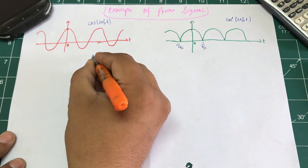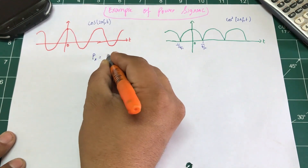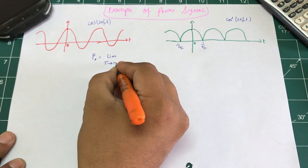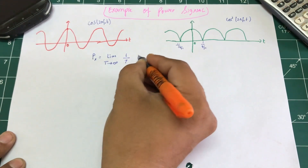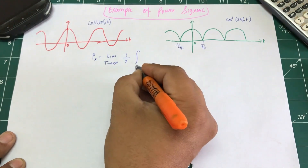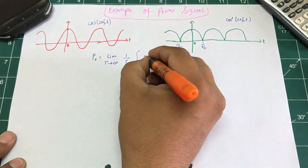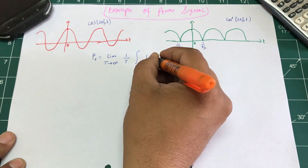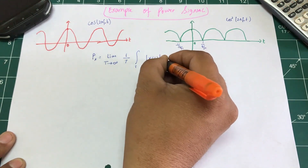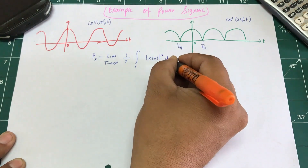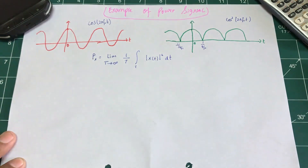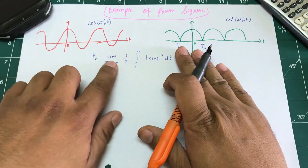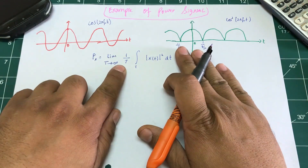The power of a signal Px is defined as the limit as T reaches infinity of 1/T times the integral of |x(t)|² dt. This is exactly the same as the energy signal definition, but we're taking an average of the signal.